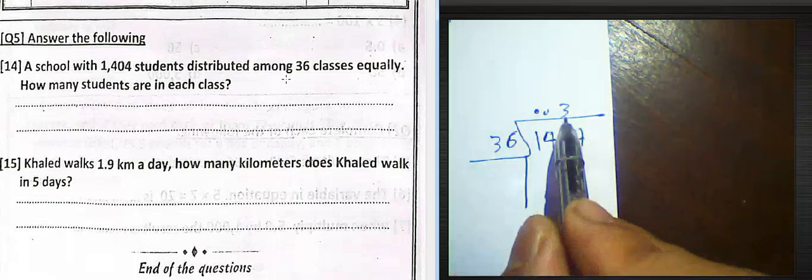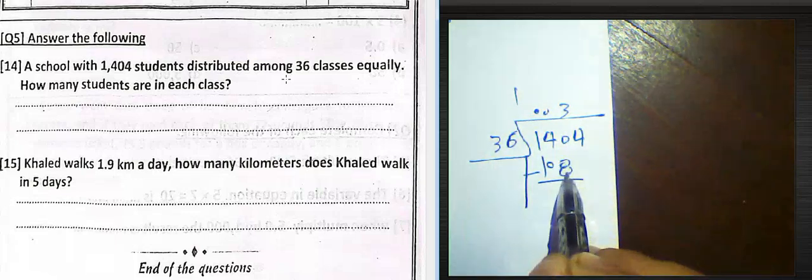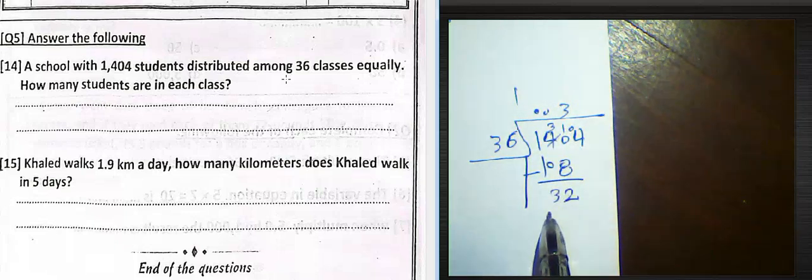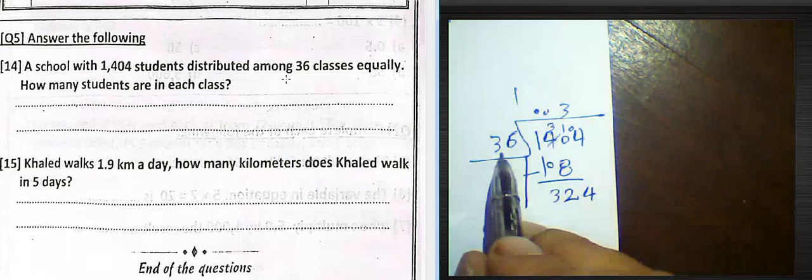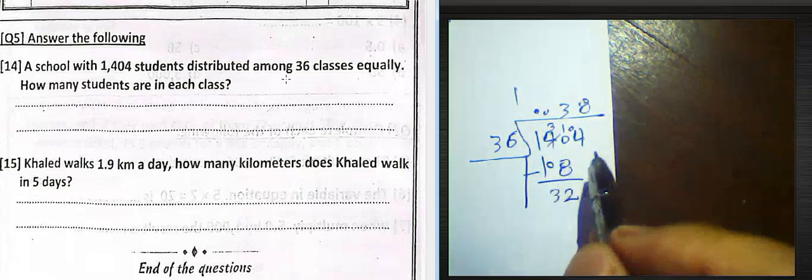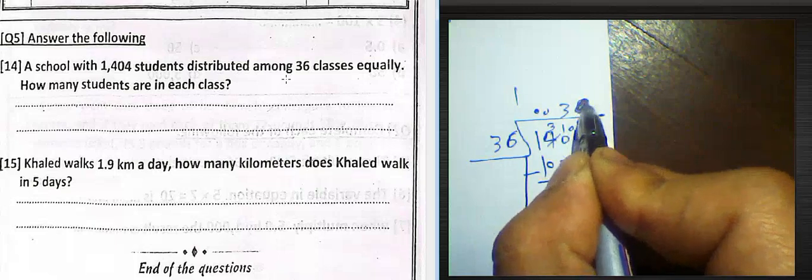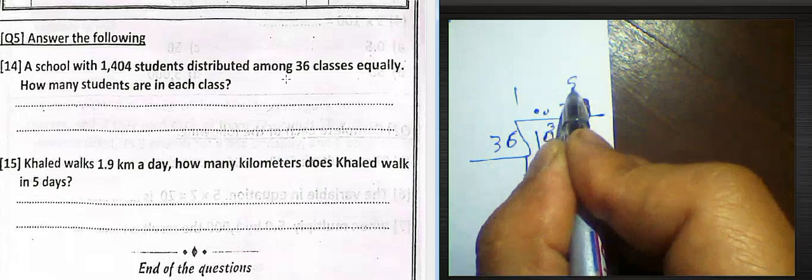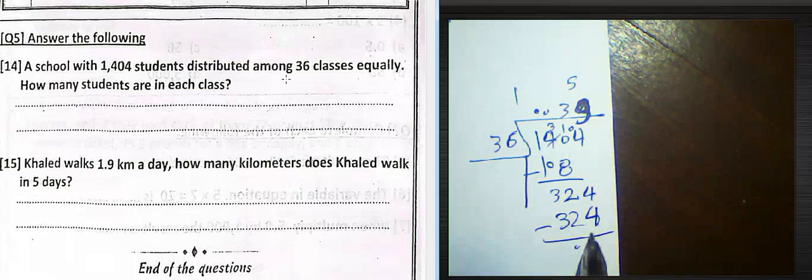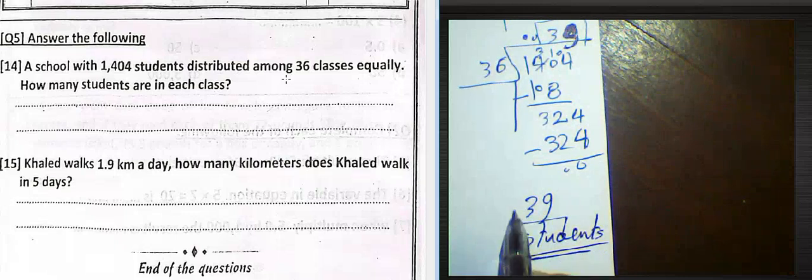1404 over 36. We must multiply by 3, because 4 times 36 equals 144, which is greater than. 3 times 6 equals 18, write 8 and carry 1. 3 times 3 equals 9 plus 1 equals 10. 10 minus 8 equals 2. 3 minus 0 equals 3. Then 4. 324 divided by 36 equals what? We can disappear digit by digit here. 32 divided by 3, we can find the result. 6 times 9, 54. Write 9 here. 6 times 9 equals 54, write 4 and carry 5. 3 times 9 equals 27 plus 5 equals 32. So the result will be 39. The number of students in each class equals 39 students. We must write 39 students.